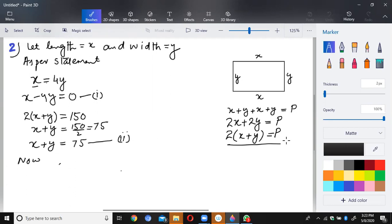One equation is x minus 4y is equal to 0. And the other equation is x plus y is equal to 75.